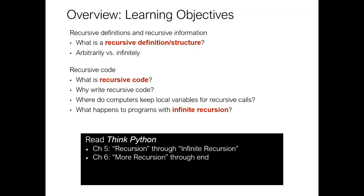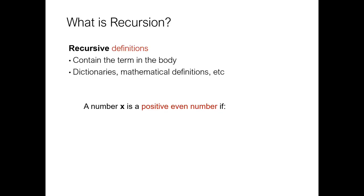As we look into the rest of this lecture, we're going to do a couple of things. We'll continue to talk about recursive definitions and data structures, focus on arbitrarily versus infinite, and then dive into some recursive code. Those are the objectives for today. Please go ahead and read recursion through infinite recursion in chapter 5 of the Downey book, and then in chapter 6, more recursion through the end.